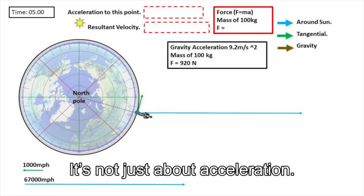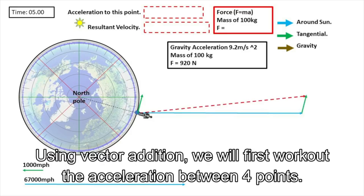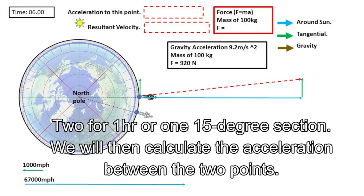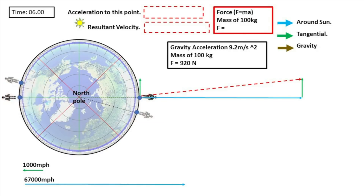Throughout the video Chris screws up many details such as units, spelling, and the magnitude of the acceleration due to gravity. Now to avoid being a hypocrite, I will point out that I will not be taking account of the tilt on the Earth in this video as it makes things just a little bit too messy. Chris says: 'It's not just about acceleration, it's the forces in play - Newtons on a mass of 100 kilograms. Using vector addition, we will first look at the acceleration between four points, two for one hour or 15-degree sections. We will then calculate the acceleration between the two points for a section from 5 to 6 in the morning and a section from 1700 to 1800 hours, then add the gravity vectors.'